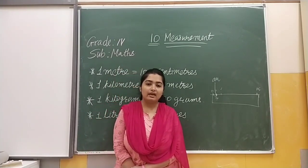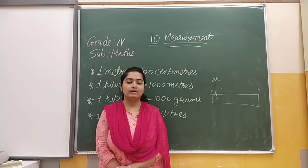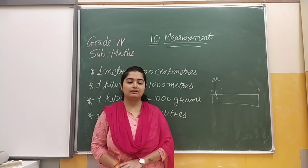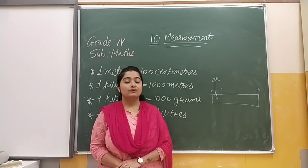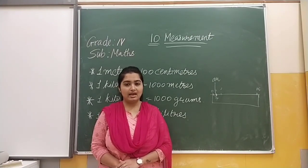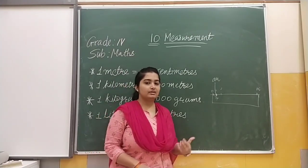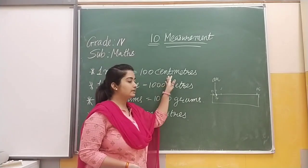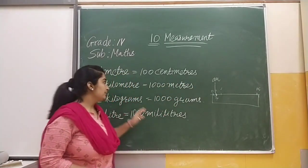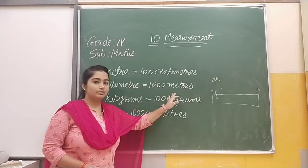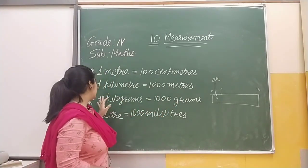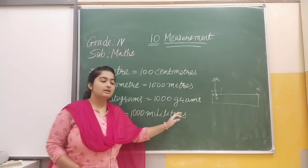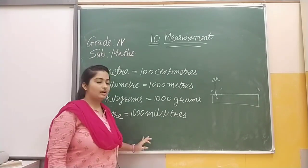Today we have to learn about conversion of our measurements — if something is given in centimeters and we need to convert it to meters or kilometers. We have already learned decimals, and based on that we will see conversions. For example: 1 meter = 100 centimeters, 1 kilometer = 1000 meters, 1 kilogram = 1000 grams, and 1 liter = 1000 milliliters.